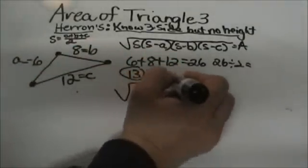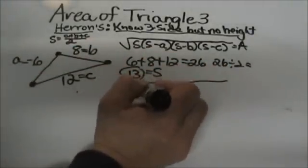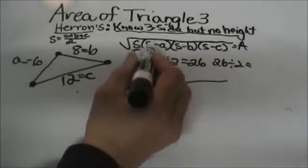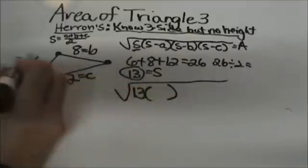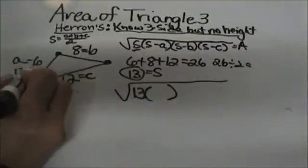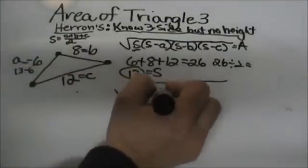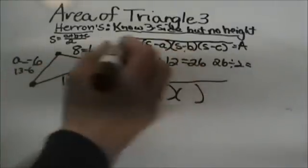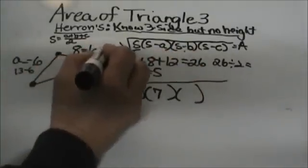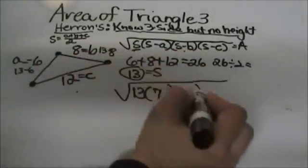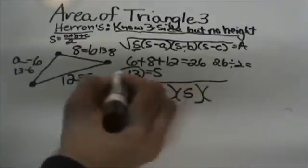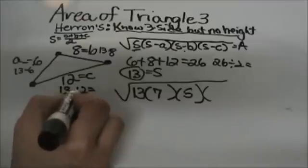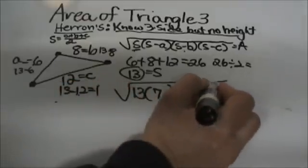Now let's take the square root of 13 which is our s value times 13 minus a. Well 13 minus a would be 13 minus 6 so that would give us 7. The next one would be 13 minus b and b is 8 so 13 minus 8 is 5. Then I am going to take 13 minus c since c is 12 so that is a 1.